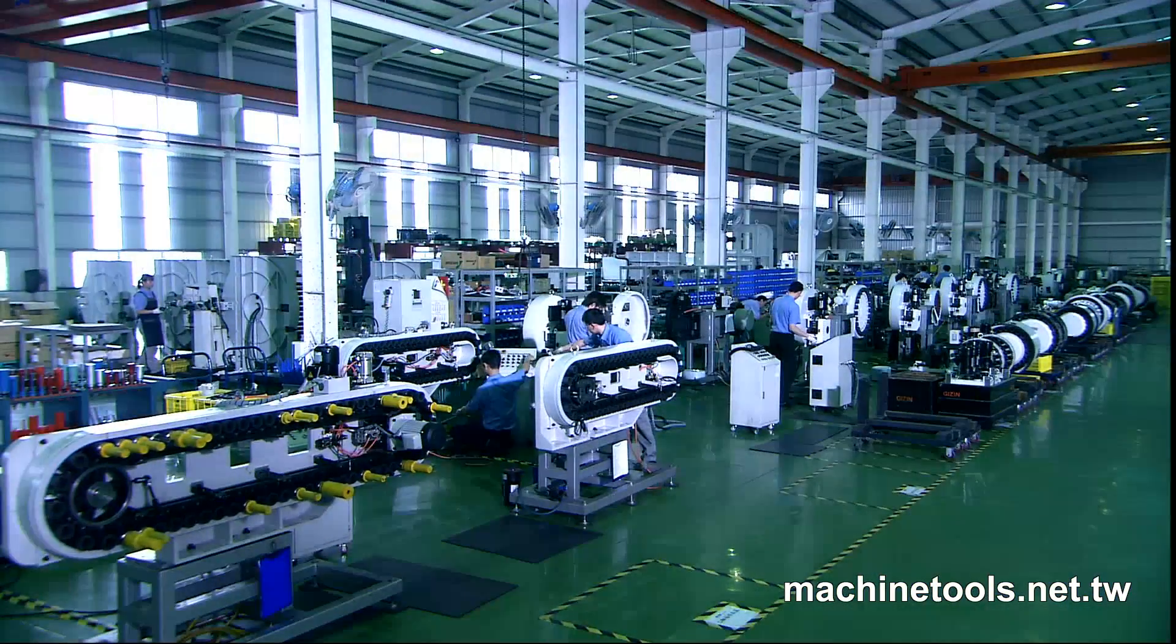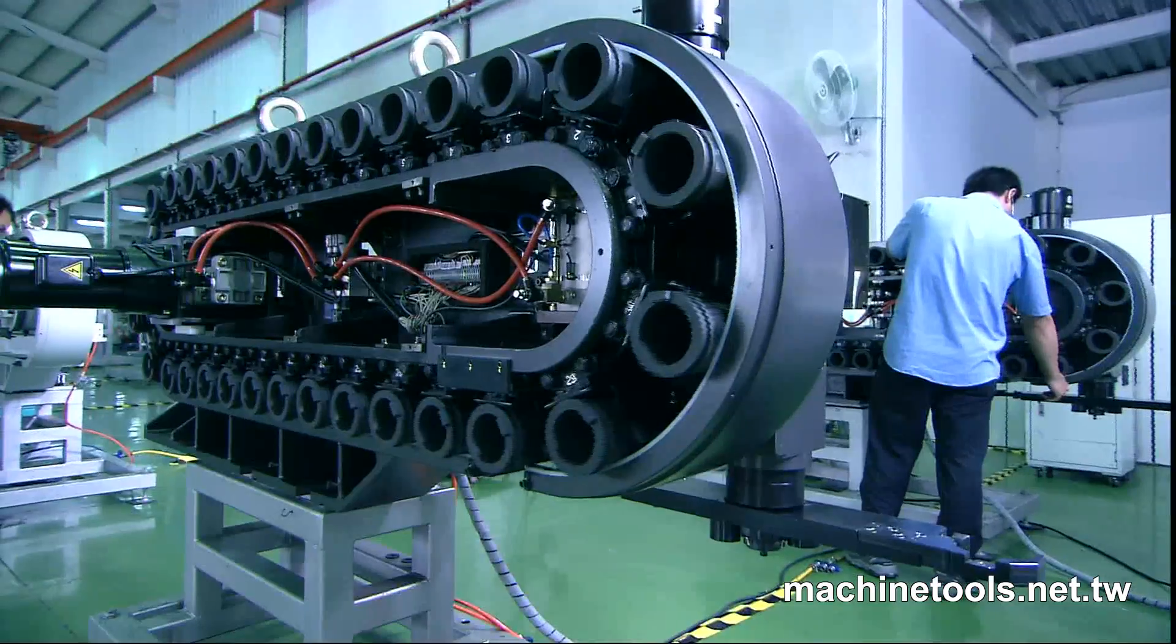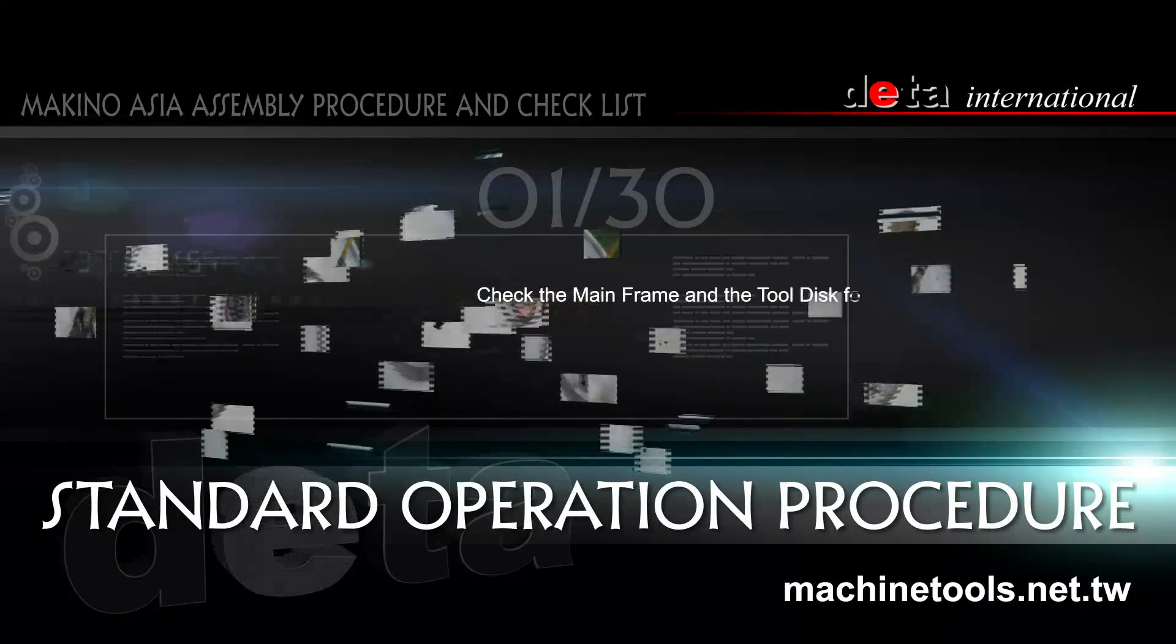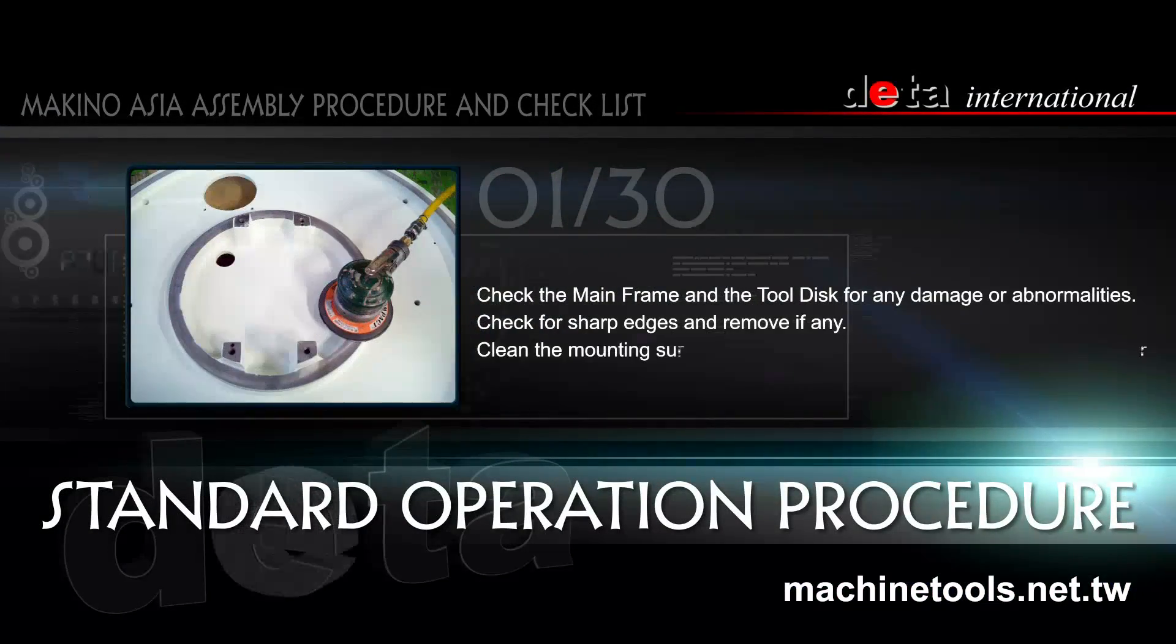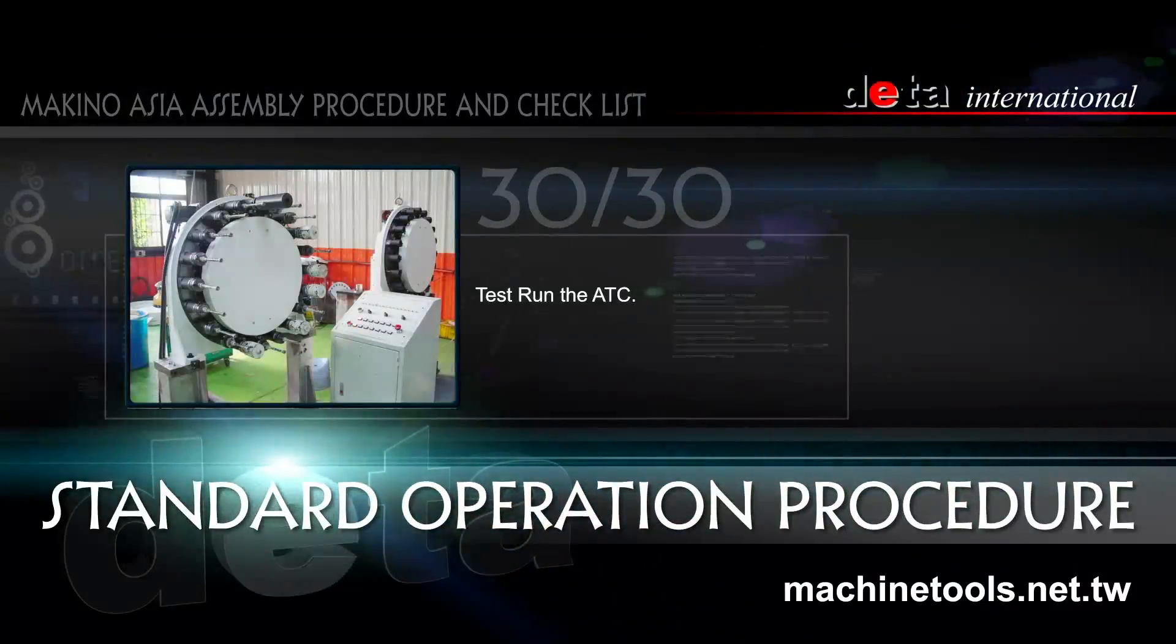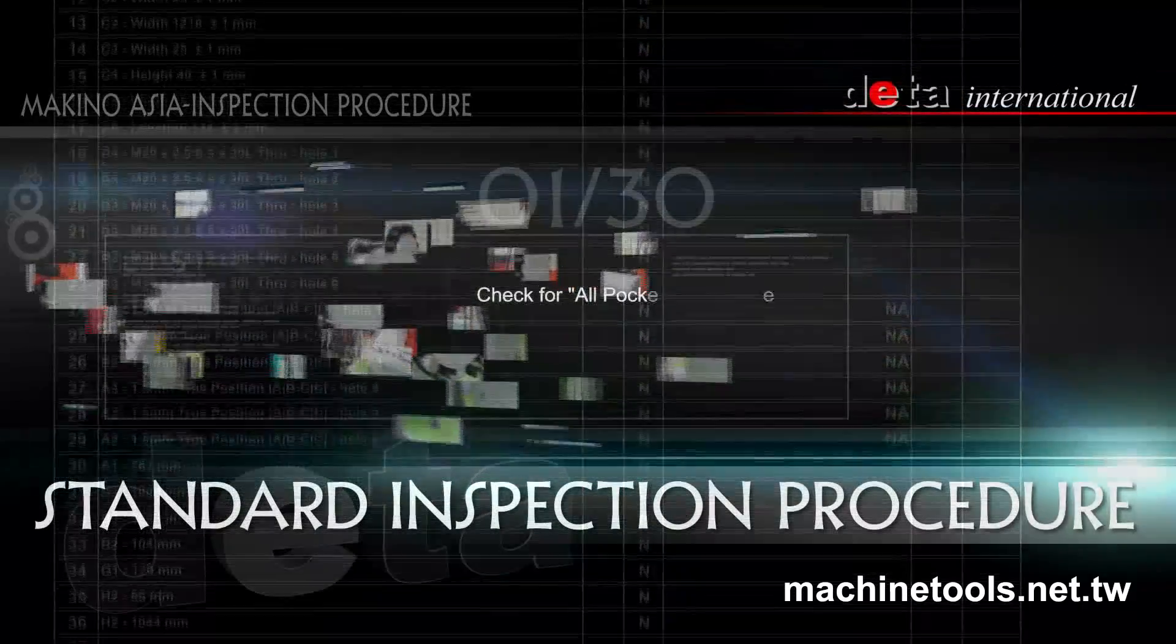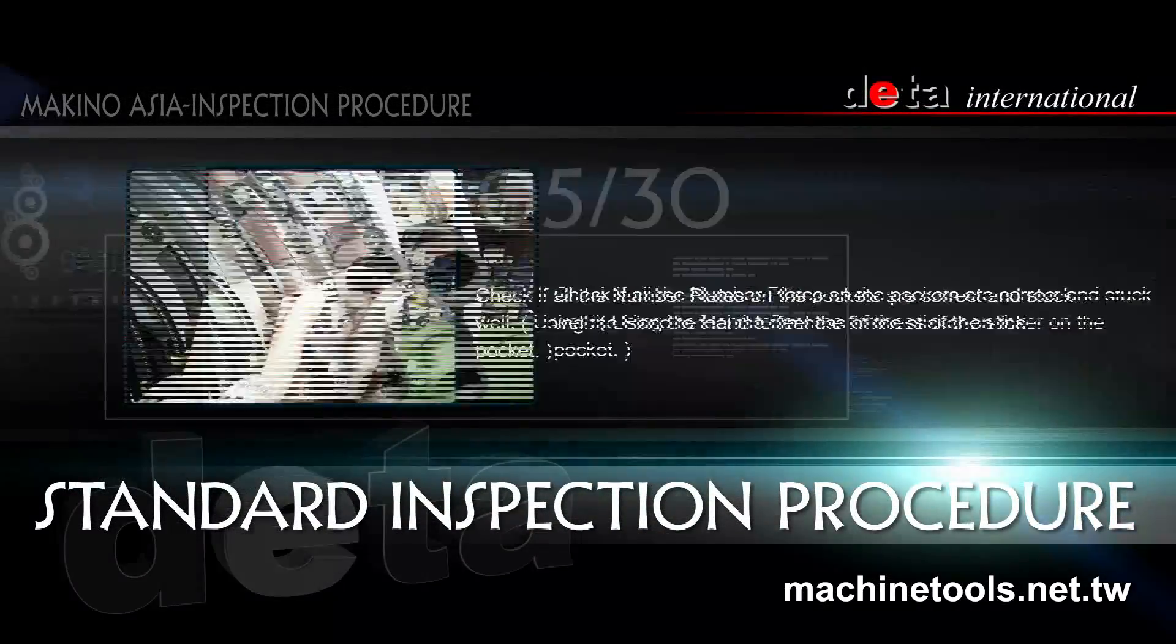Every automatic tool changer has a set of standard operating procedures to ensure unity between operational components. A clearly written and precise operator's manual details every step necessary. After setup, standard measuring procedures ensure every link is properly arranged.